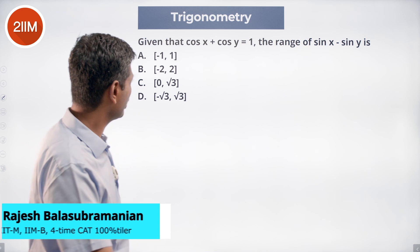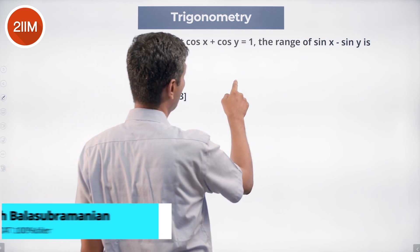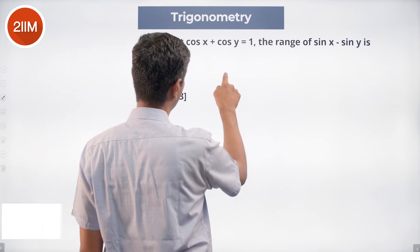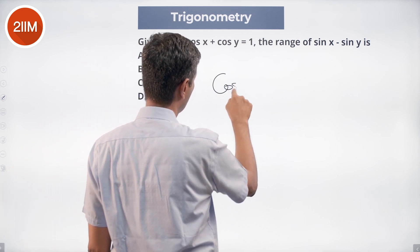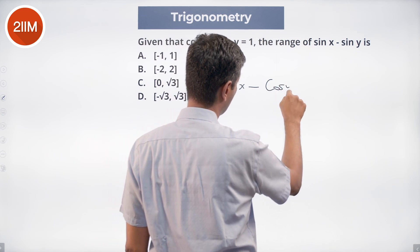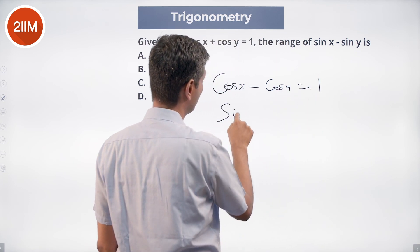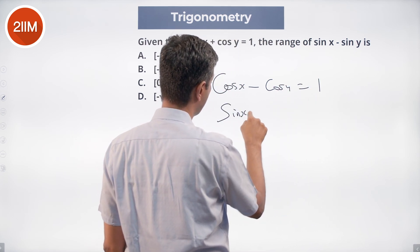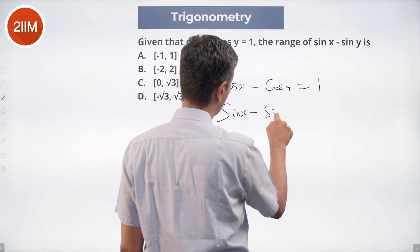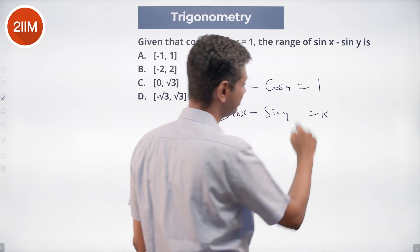Let's attack this: cos x plus cos y equals 1. What is the range of sine x minus sine y? Let's say cos x plus cos y equals 1, and let's say sine x minus sine y equals k.